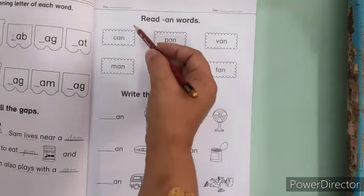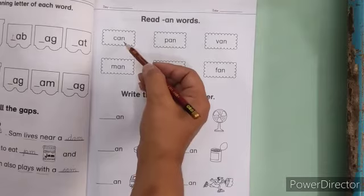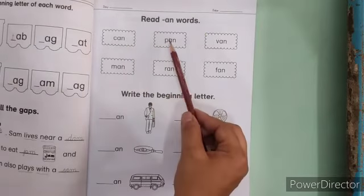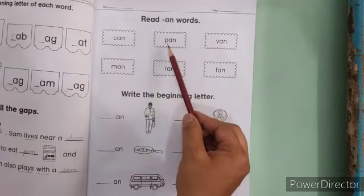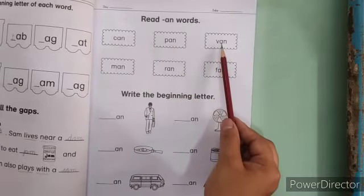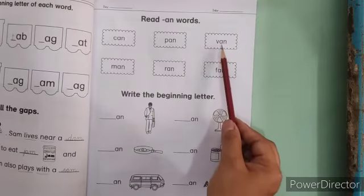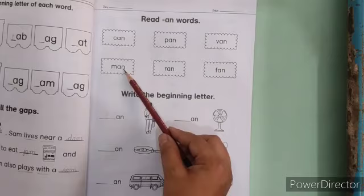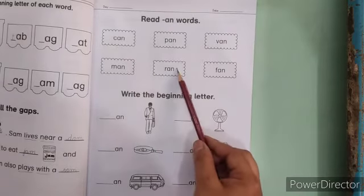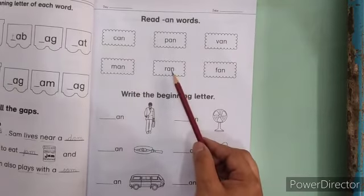Now first word is can, can, can. Pan, pan, pan. Van, van, van. Man, man, man. Ran, ran, ran.